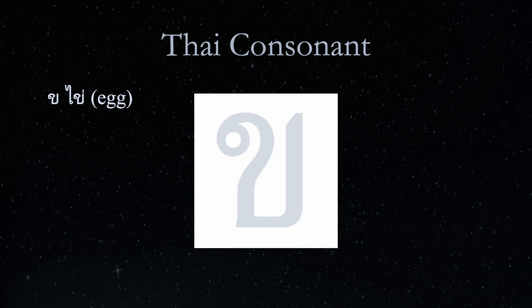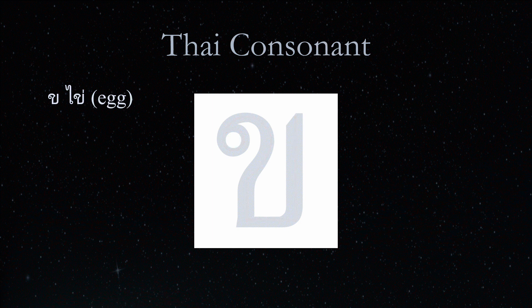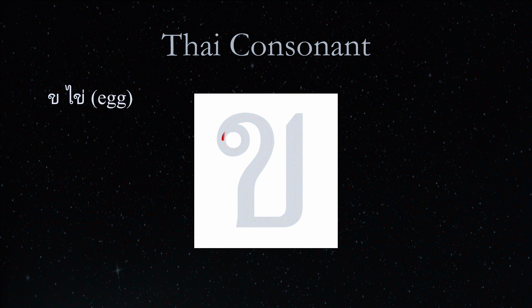Kho Kai is written like this. Important here is to start by drawing the circle in the clockwise direction. If you then follow the illustration here, you should not have any problems writing Kho Kai from beginning to end without raising the pen.